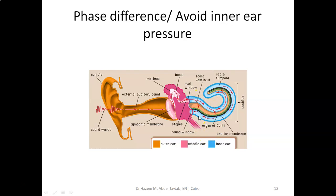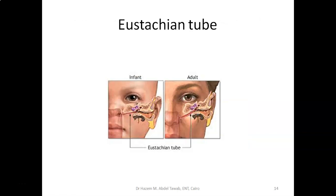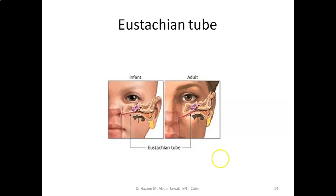The Eustachian tube has two important functions. First, it equalizes the pressure around the eardrum — the atmospheric pressure from the external canal and the middle ear air pressure must be balanced. Second, it drains middle ear secretions, since the middle ear glands are secreting all the time and most drainage goes through the Eustachian tube.